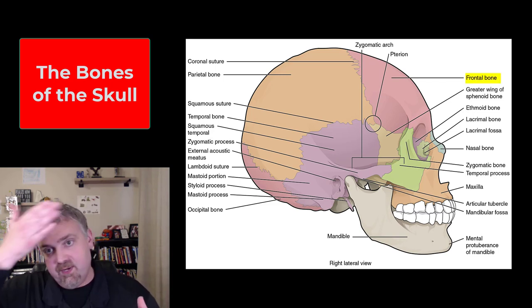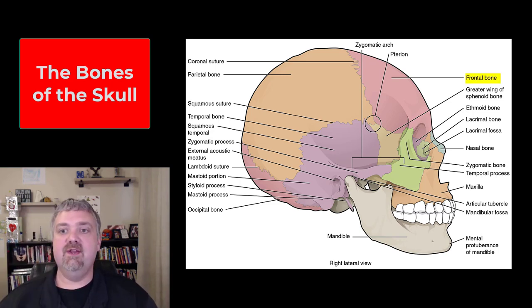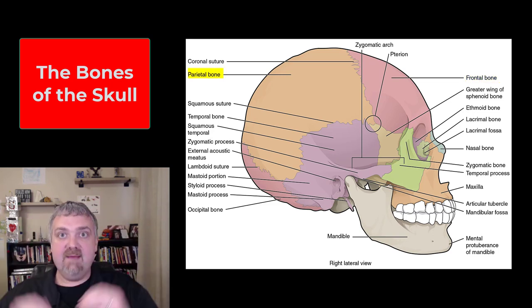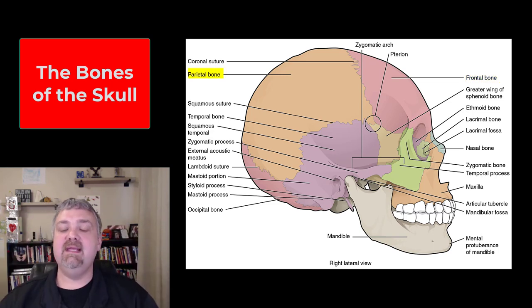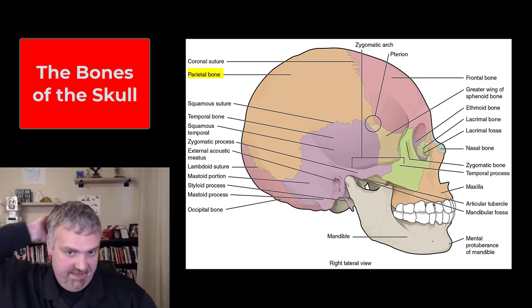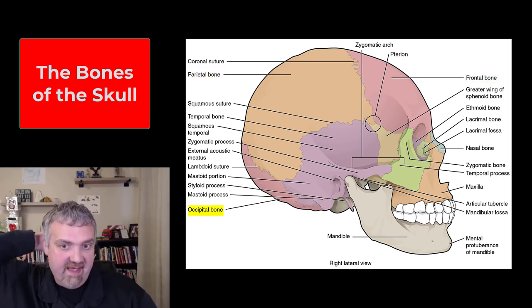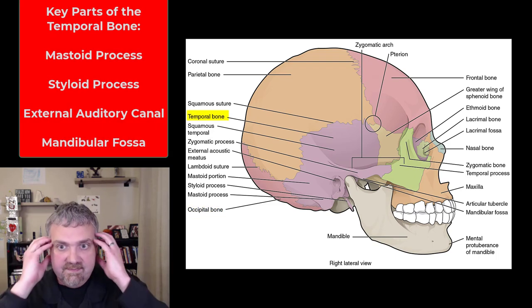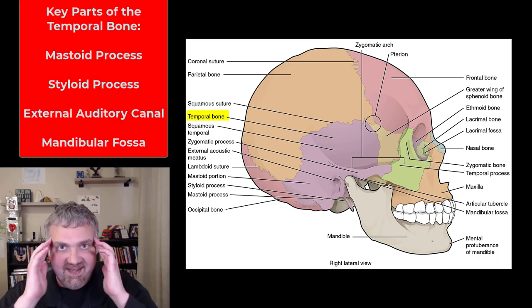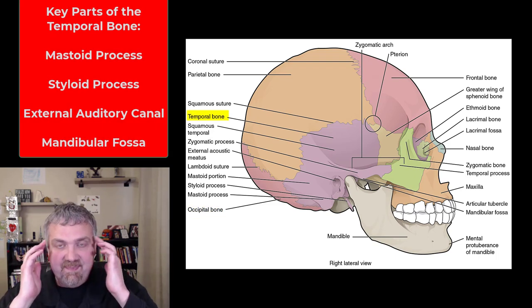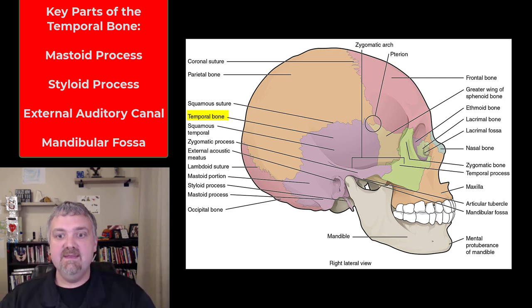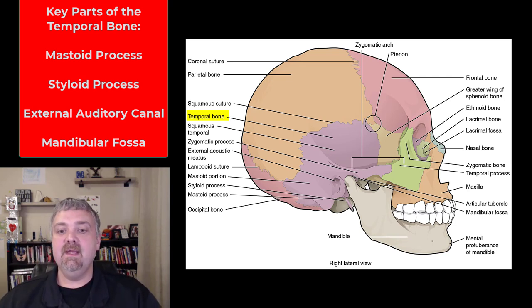So first we have the frontal bone on your forehead, then we have your two parietal bones — they make up the top of your brain case — and then on the back we have the occipital bone. The temporal bone, I always think of the temples being up here, but that's actually where the sphenoid bone would be. The temporal bone is going to be that big bone around your ear.